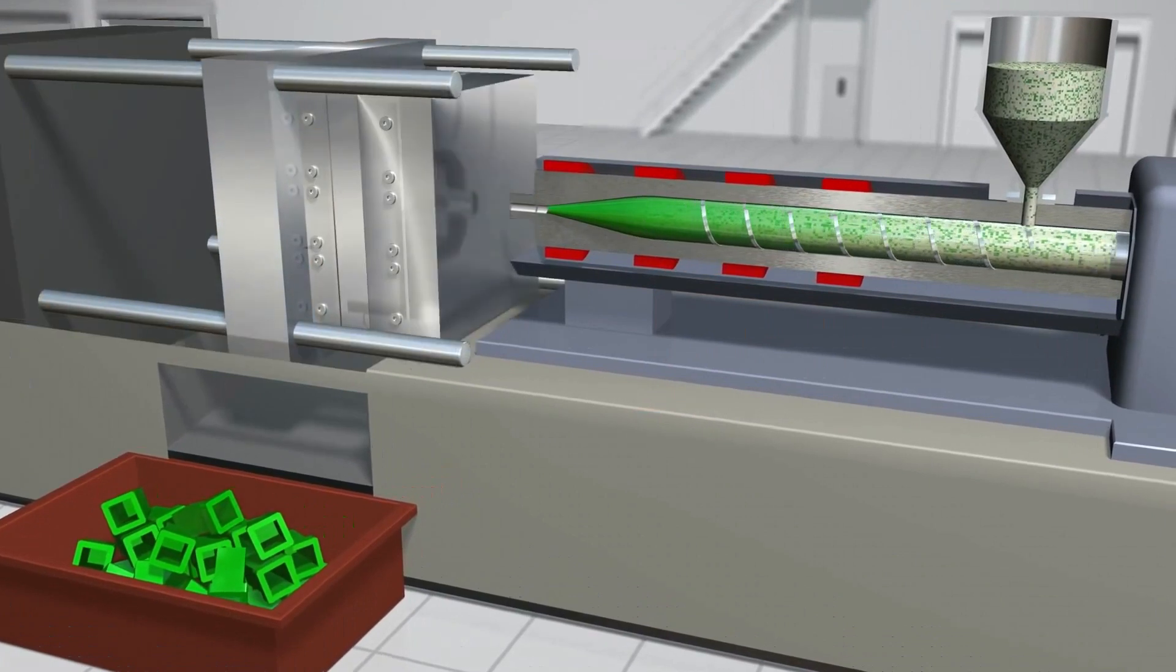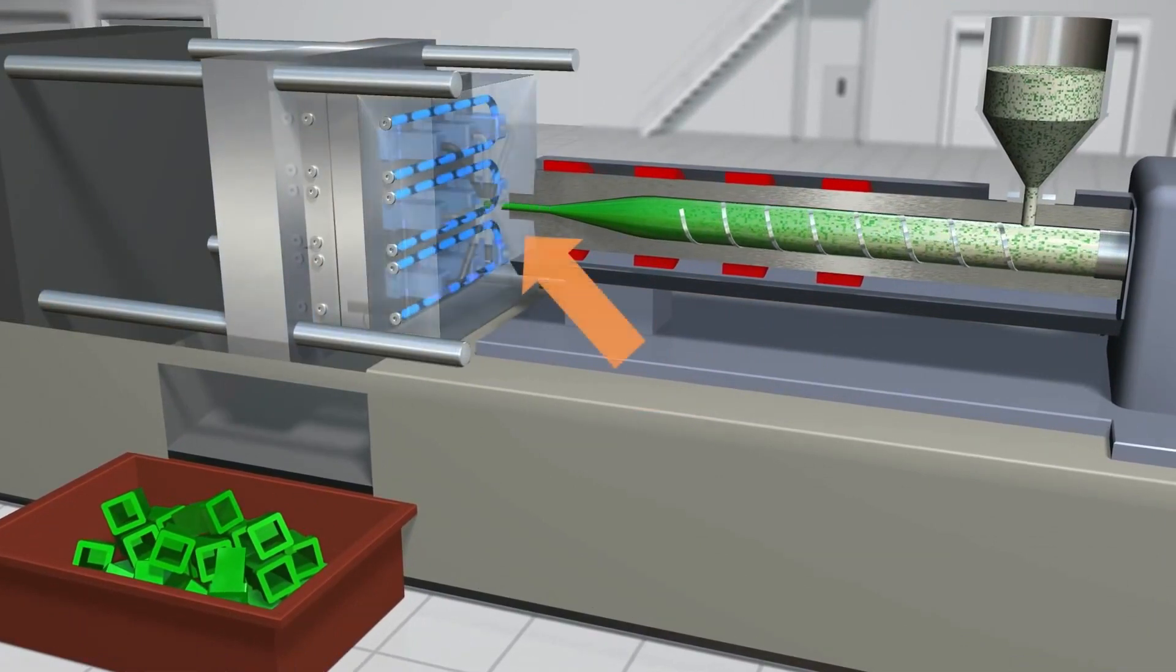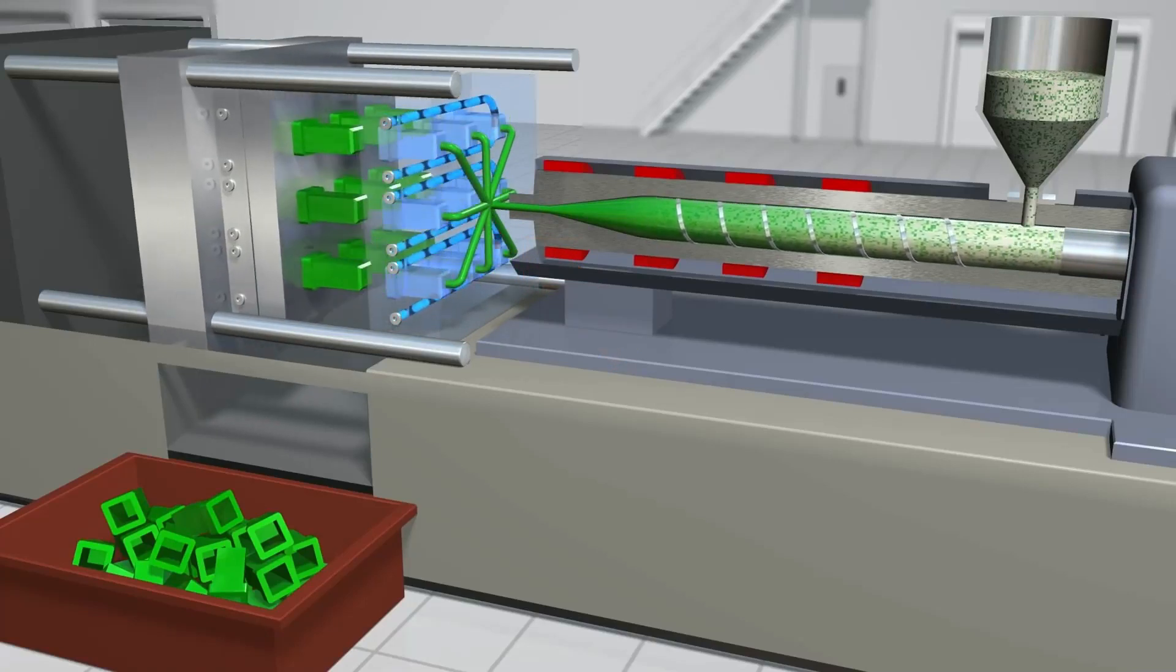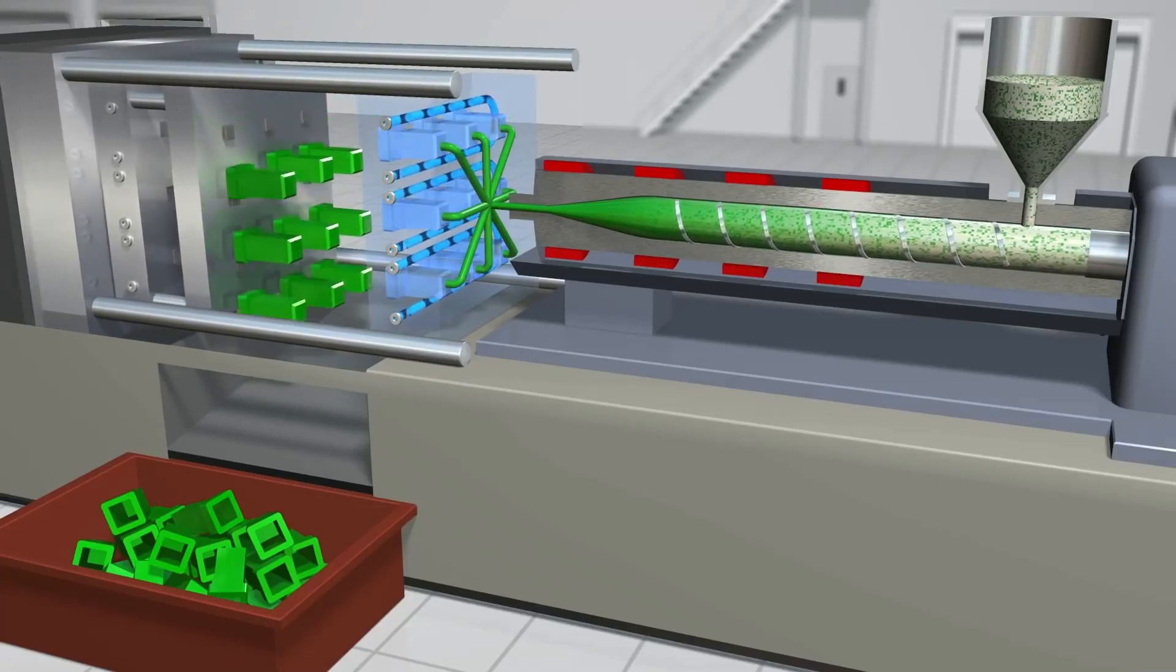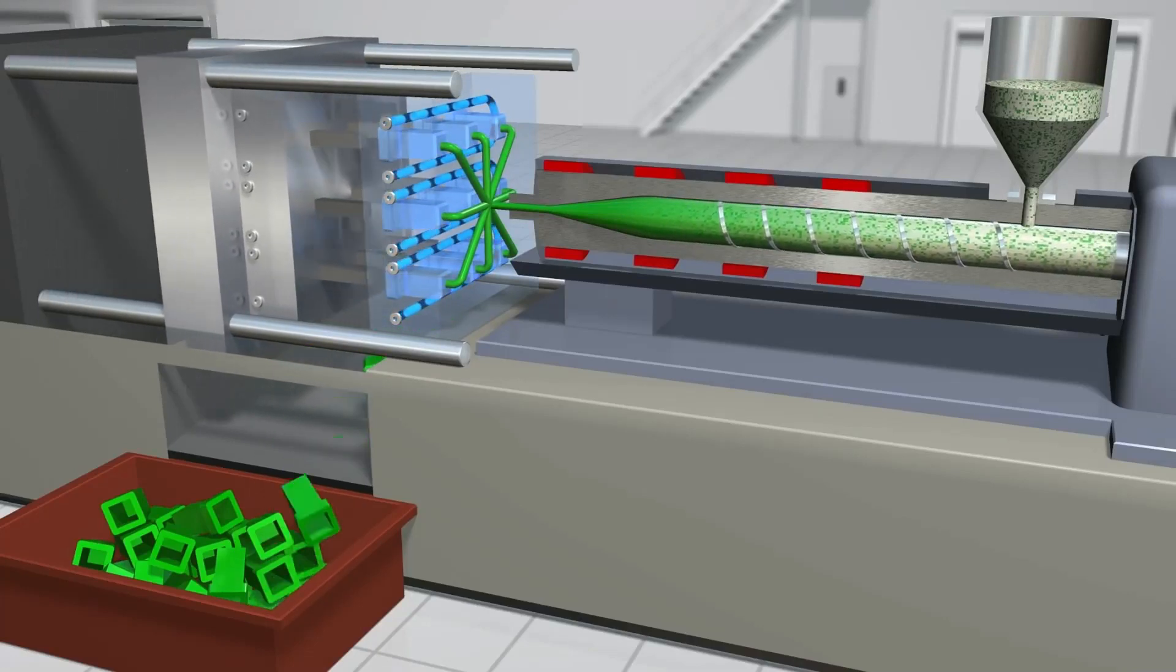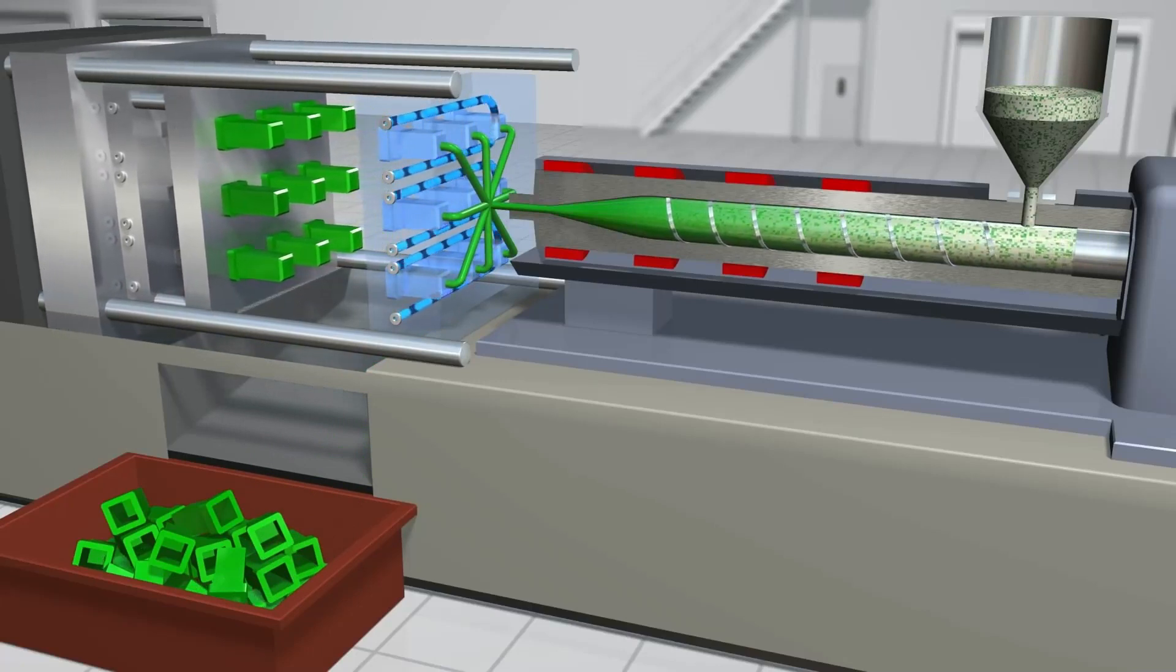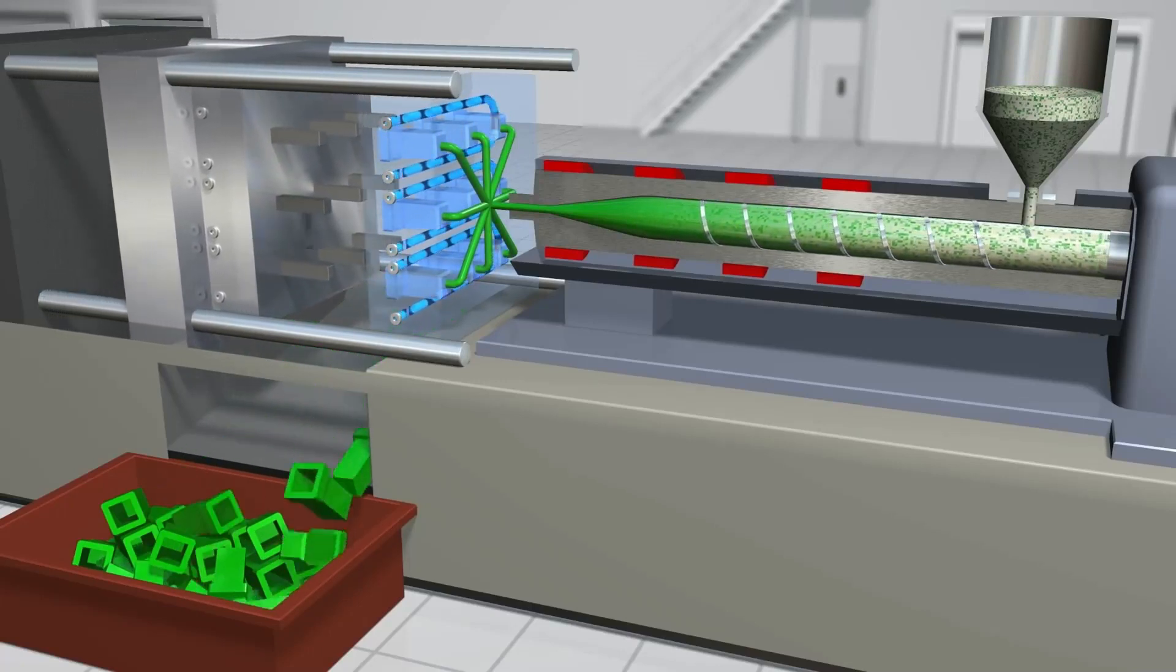And then injected into the mold to form the part or parts. The mold is quickly cooled, letting the parts solidify. The mold opens to release the parts and the mold closes again to repeat the cycle over and over again.